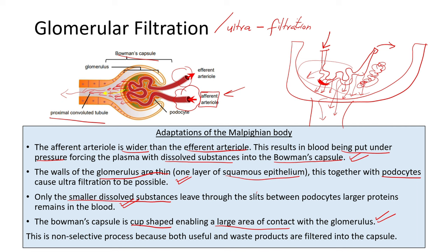Don't just mention the adaptations alone. Don't just say the Bowman's capsule is cup-shaped — that only gives you one mark. You must also state what the advantage of the cup shape is. That is how you get the two marks in the adaptations.